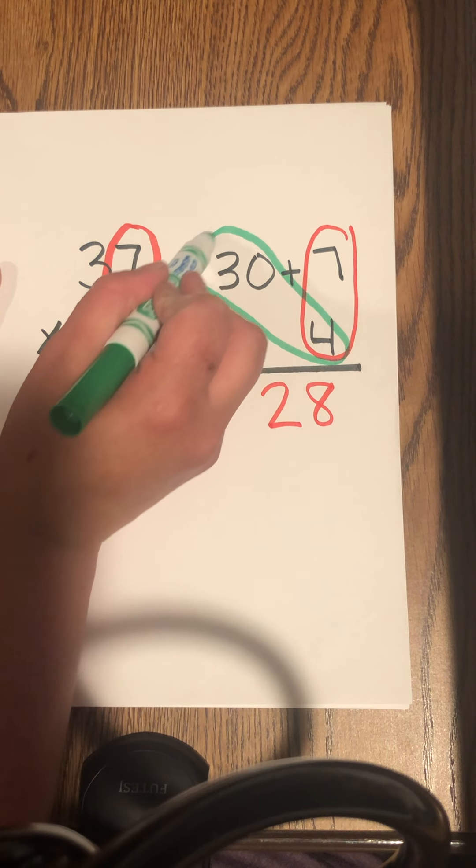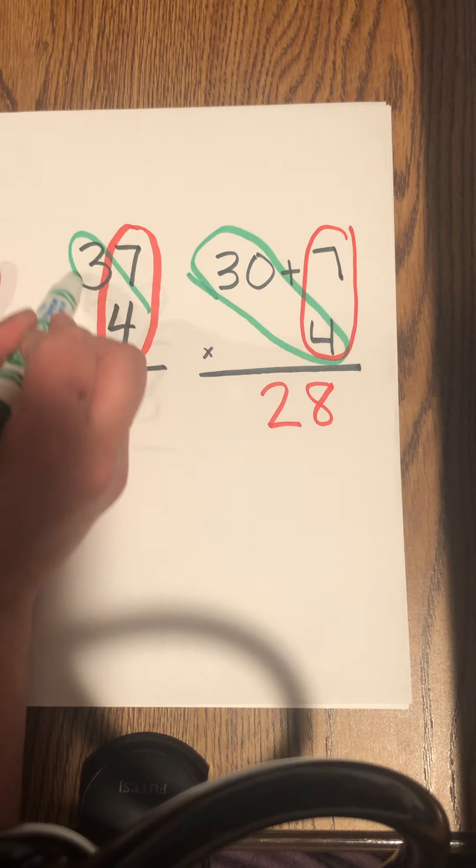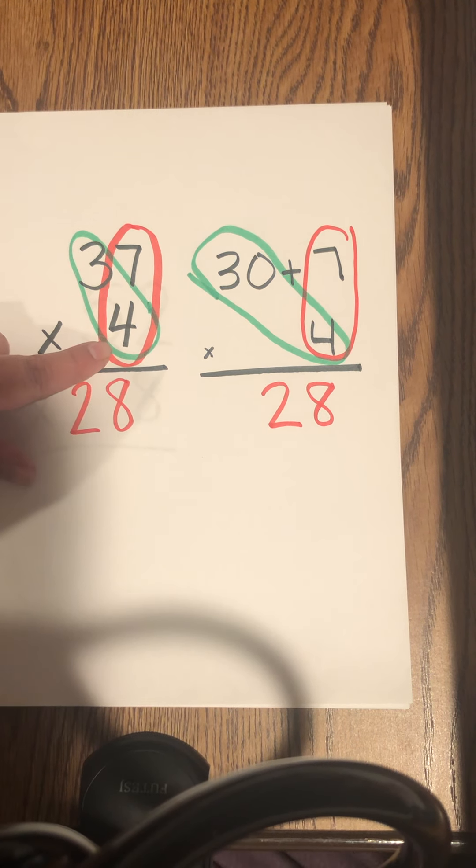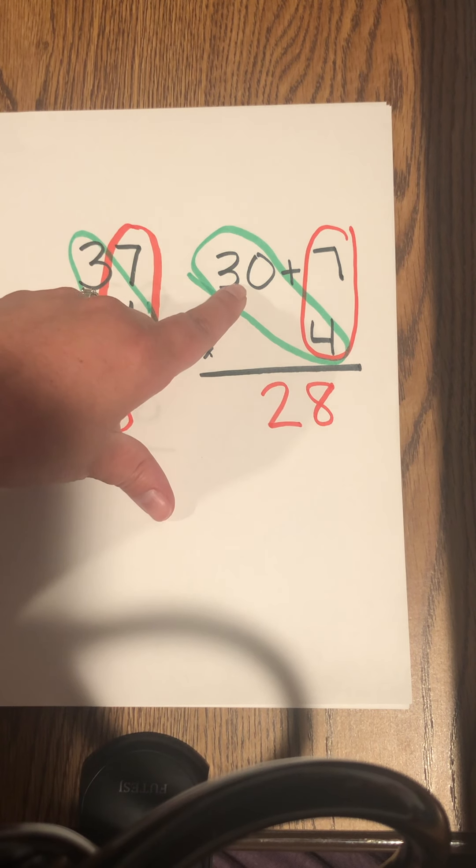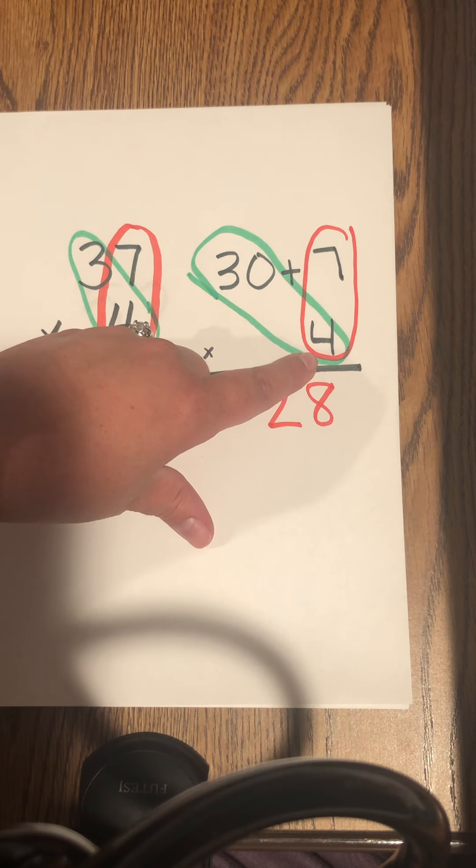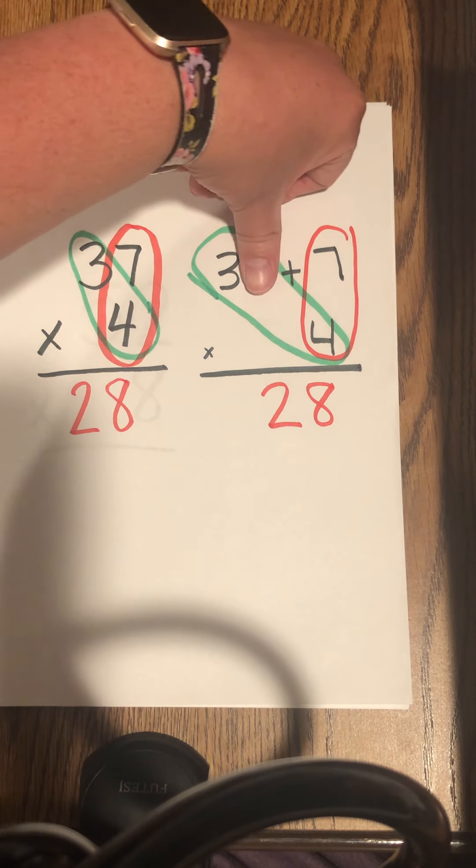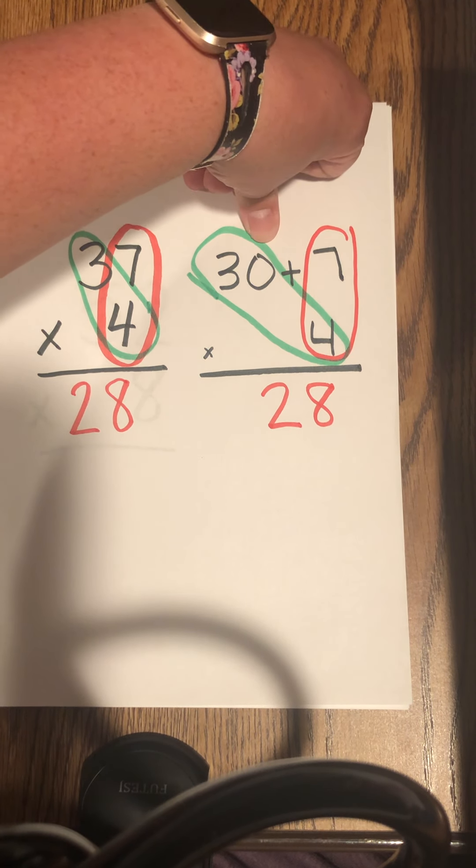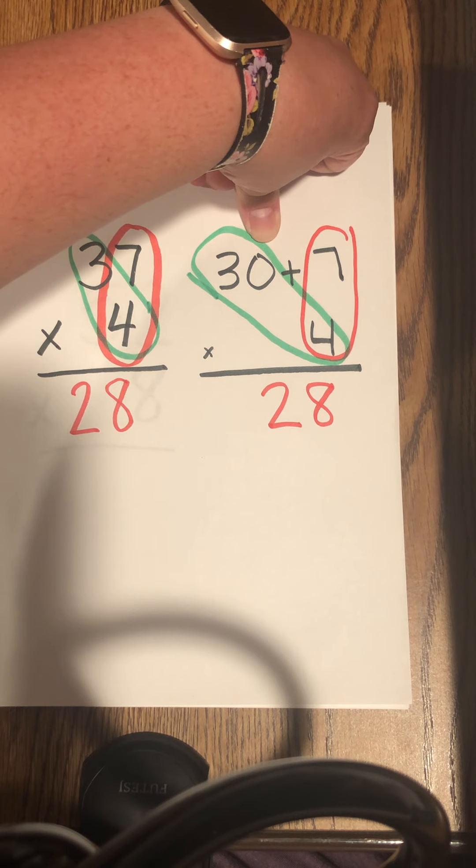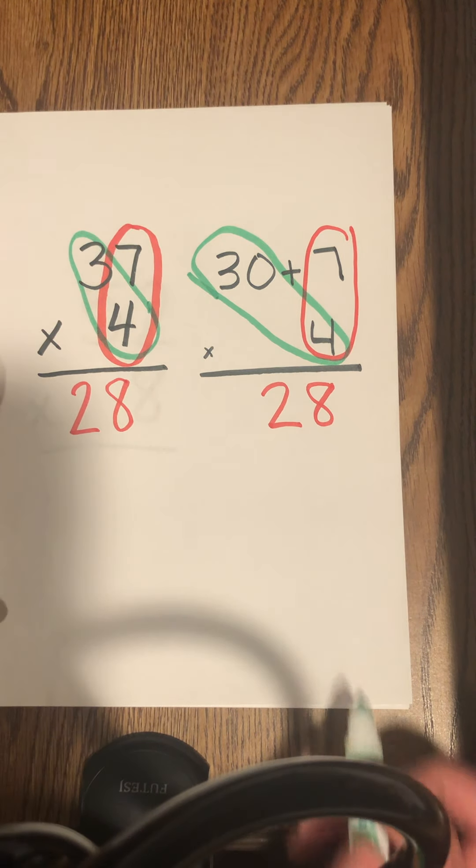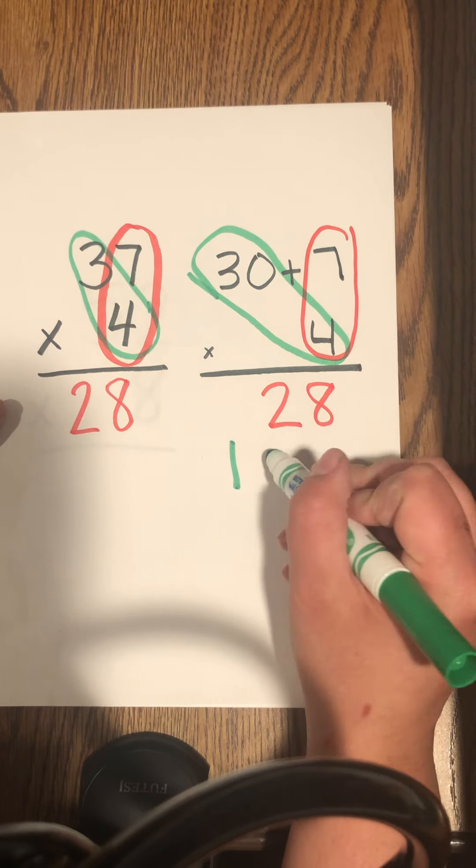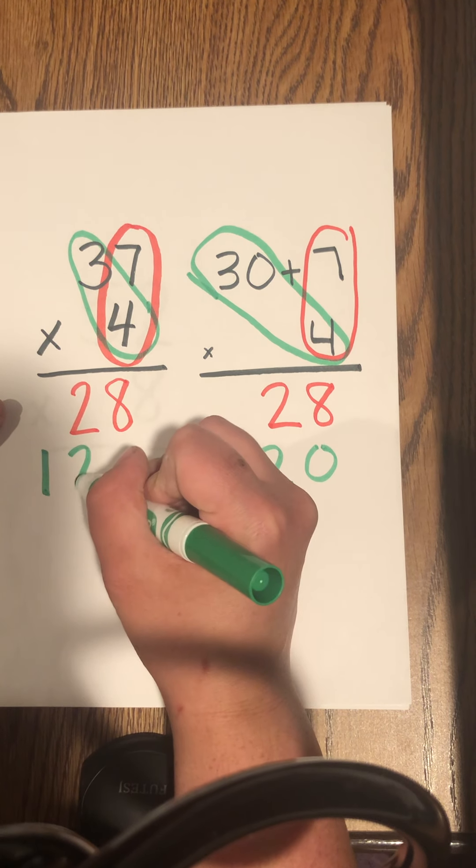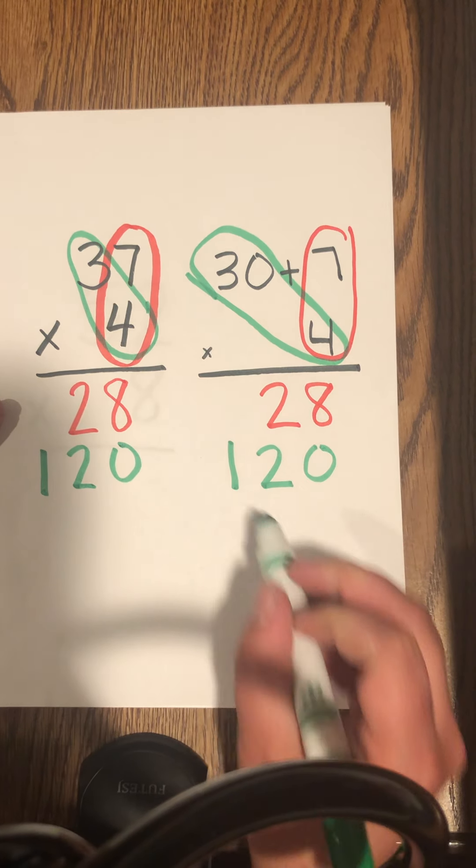Now, I'm going to look at this part. Remember, it's not 3 times 4. This is in the 10th spot. It is 30 times 4. And we know how to do those, right? We times 3 times 4, 12, add the zero. So what would that be? That would be 120.